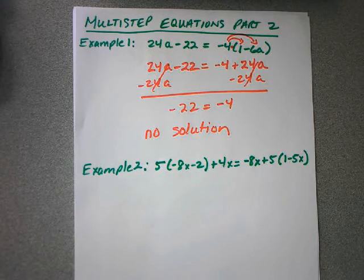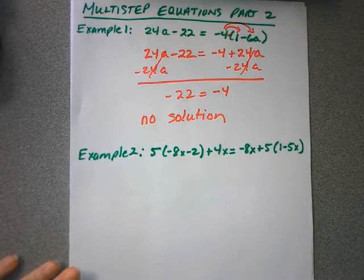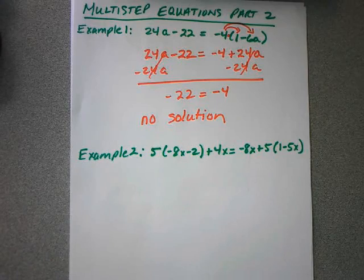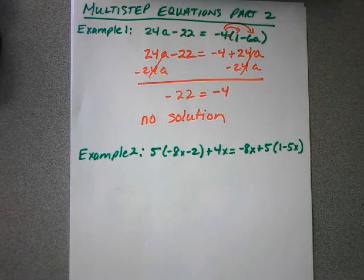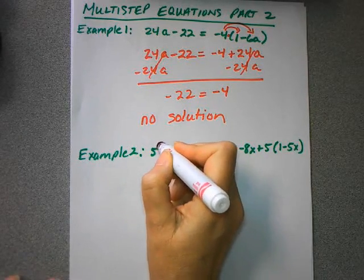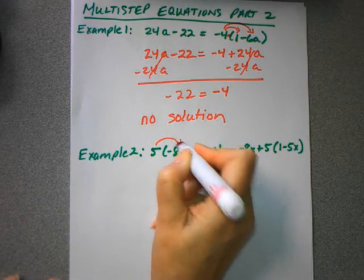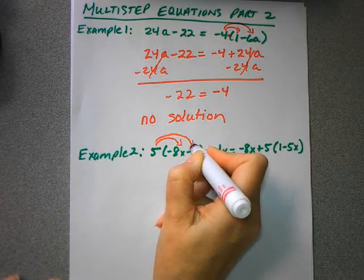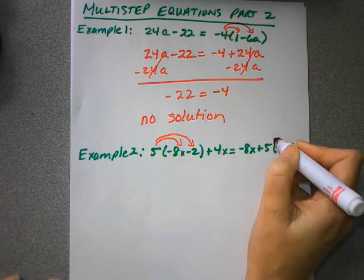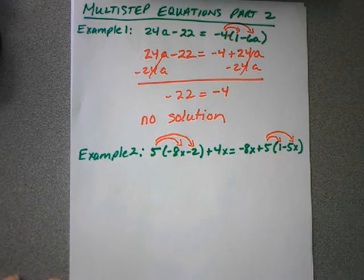Let's move on to example 2. We've got lots of parentheses in example 2. So again, to get rid of the parentheses, we need to distribute or multiply the outside term times both of the inside terms. And this time we're going to be doing it twice, once on each side.